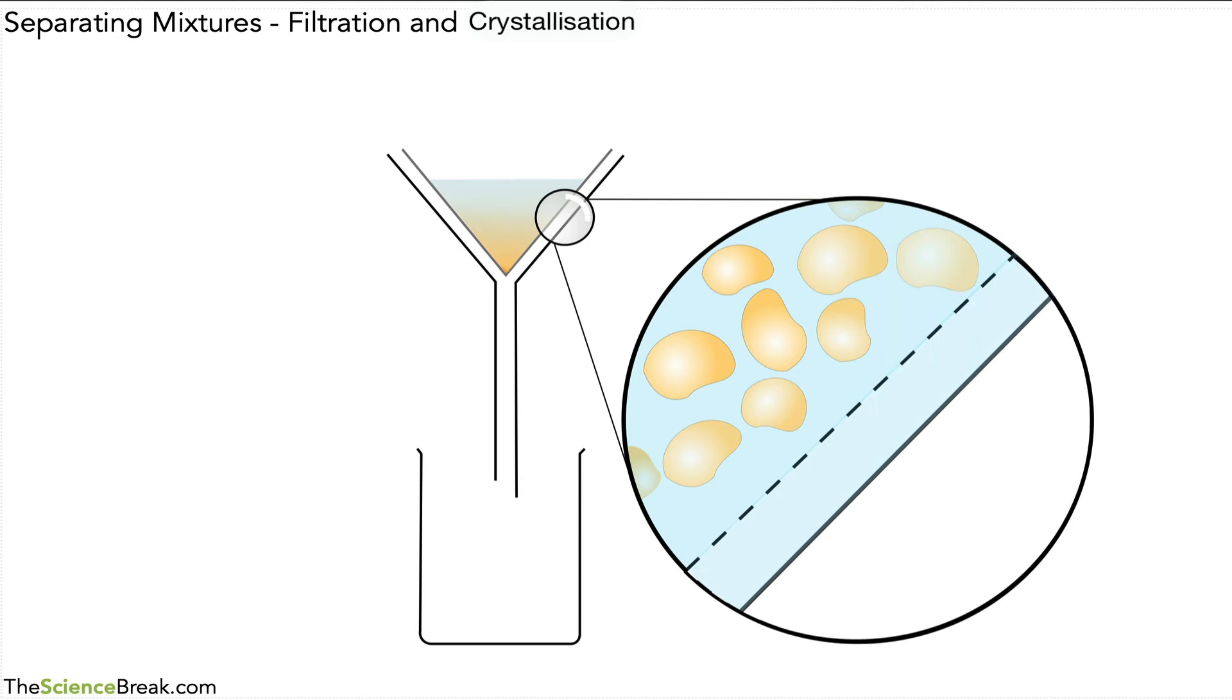If we were able to see, we might see something like this. Here we have our filter funnel on the outside magnified from the diagram above and there is our filter paper. You might notice that the filter paper has small holes in it and these are called pores.